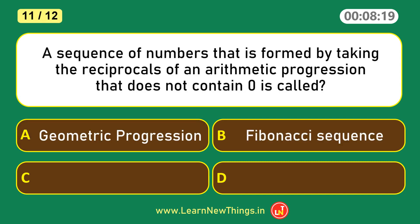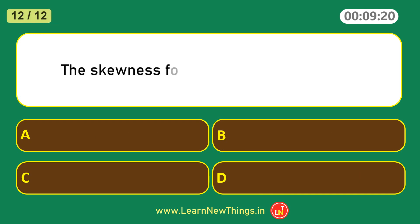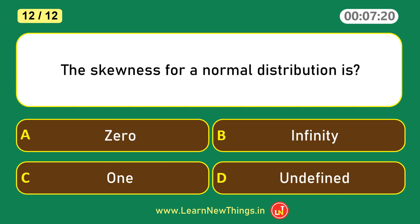A sequence of numbers that is formed by taking the reciprocals of an arithmetic progression that does not contain zero is called harmonic progression. The skewness for a normal distribution is 0.